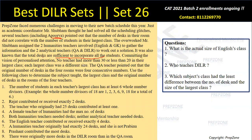Committing the vision of personalized attention, no teacher had more than 30 or less than 20 students in their largest class. Which means the largest class size is between 20 and 30. And each largest class was of a different size.